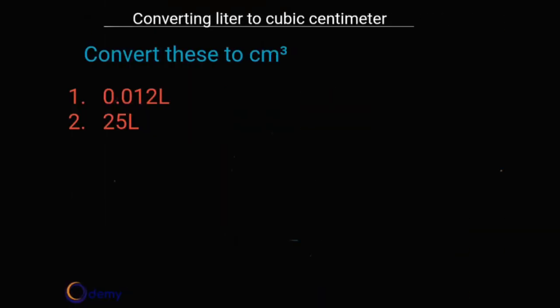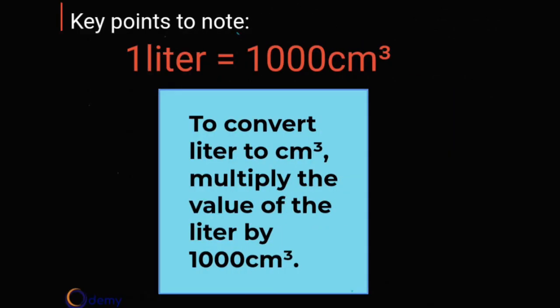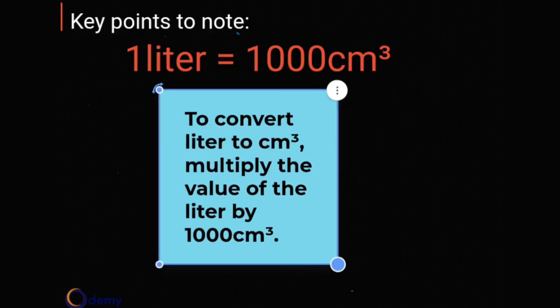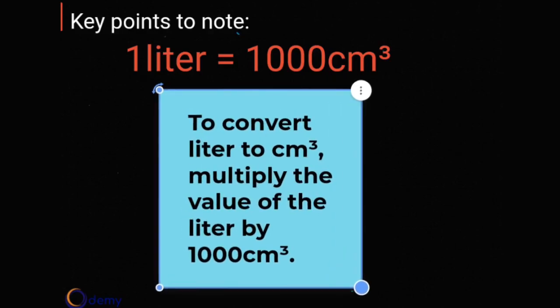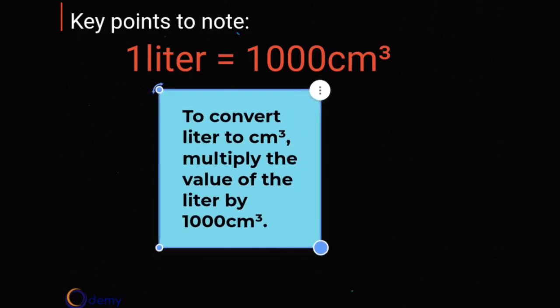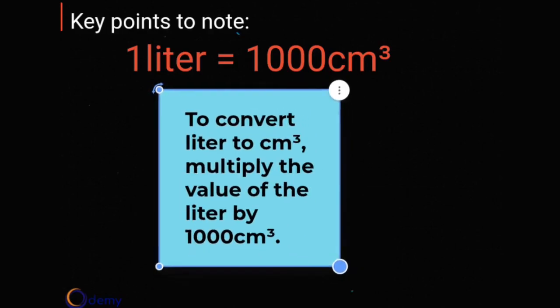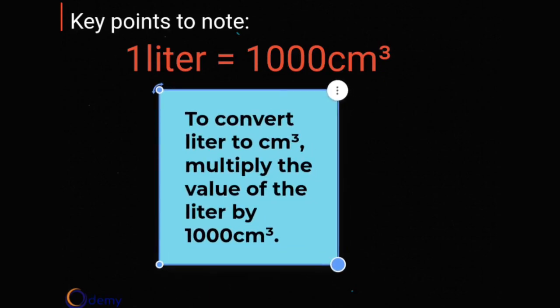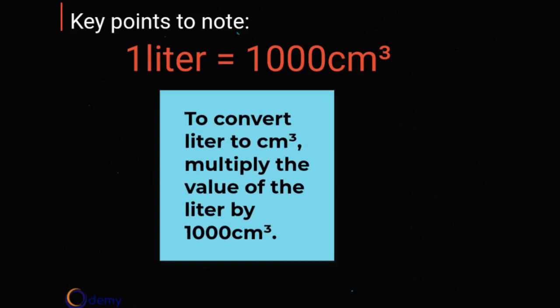Now I want you to solve these: convert 0.01 liters and 25 liters to centimeter cubed. Remember, one liter equals 1000 centimeter cubed, and to convert you multiply the value of the liters by 1000. Make sure to answer the questions I gave you. Thanks for watching.